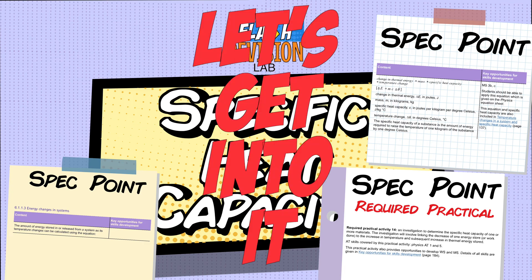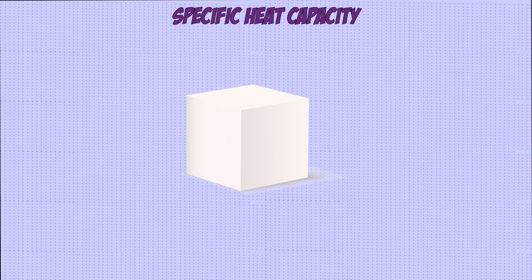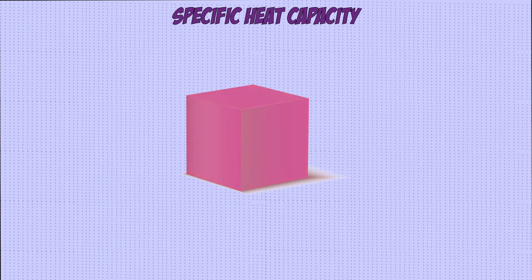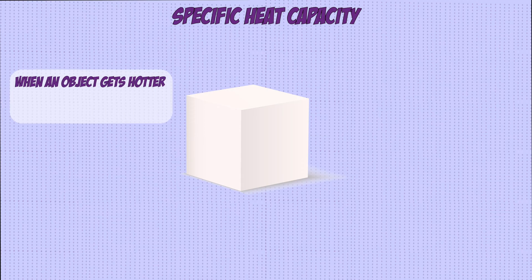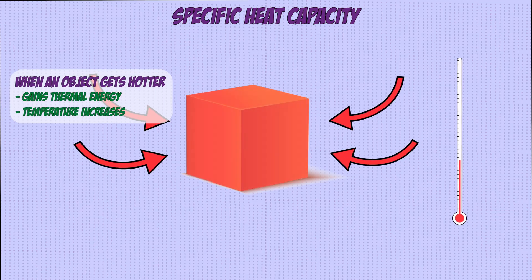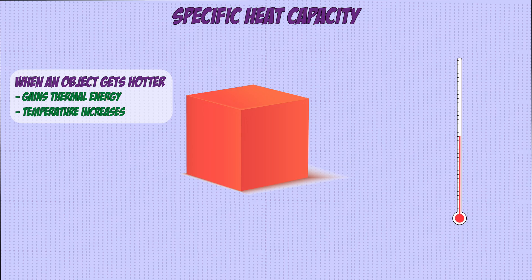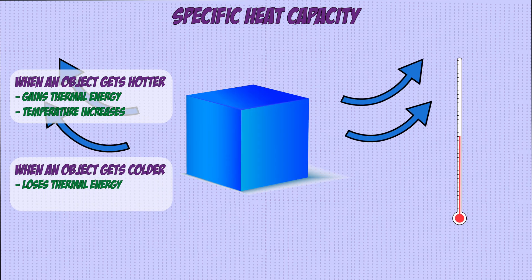Let's talk about specific heat capacity. Whenever an object heats up or cools down, there's always a change in energy. When an object gets hotter, it has an increase in energy which raises its temperature, whereas an object getting cooler loses energy and its temperature decreases.